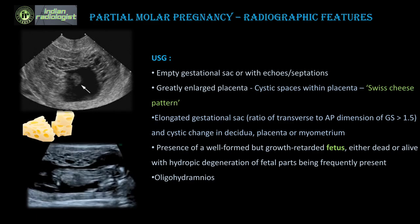In partial molar pregnancy, the most important differentiating feature is that you can see a gestational sac or a fetus. The gestational sac may be anembryonic with no yolk sac or fetal parts, or empty with echoes or septations, or contain an abnormal, growth-retarded, dead, or live fetus with hydropic degeneration. The placenta is enlarged or the decidual reaction shows small cystic areas giving the classical Swiss cheese pattern, though this may often be missed. An elongated gestational sac with a transverse-to-anteroposterior ratio greater than 1.5 has been described, and these cases are often associated with oligohydramnios.